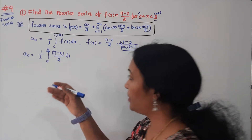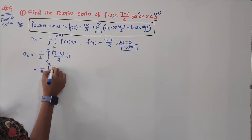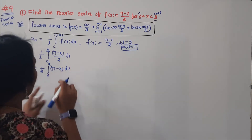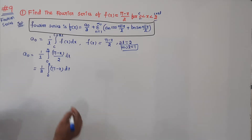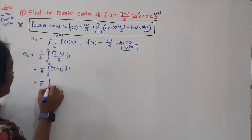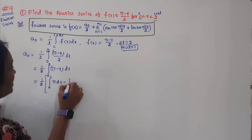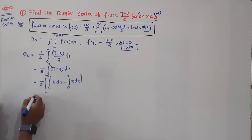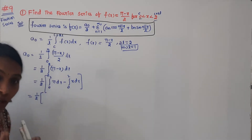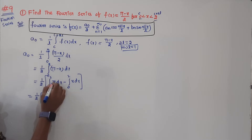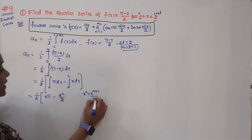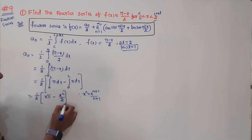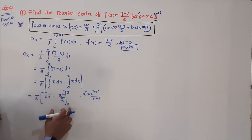Factor out 1/2 as a constant. We get (1/2) × integral from 0 to 2 of (π - x) dx. Since π is a constant, split: (1/2) × [integral of π dx minus integral of x dx]. Integration gives π·x minus x²/2, using the power rule: x^(n+1)/(n+1), so x^1 becomes x²/2. The limits are 0 to 2.